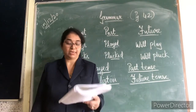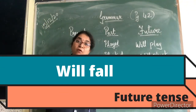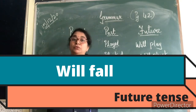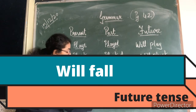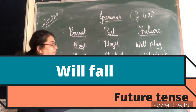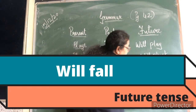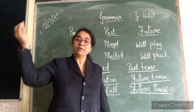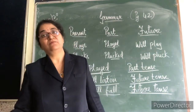Next sentence: The branches will fall to the ground. Branches will fall — abhi nahi gira hai, baad mein girne wala hai. That is again future tense. The verb is will fall — underline it. Which tense? Future tense. The branches will fall — kal girega, baad mein girega — that is future tense.